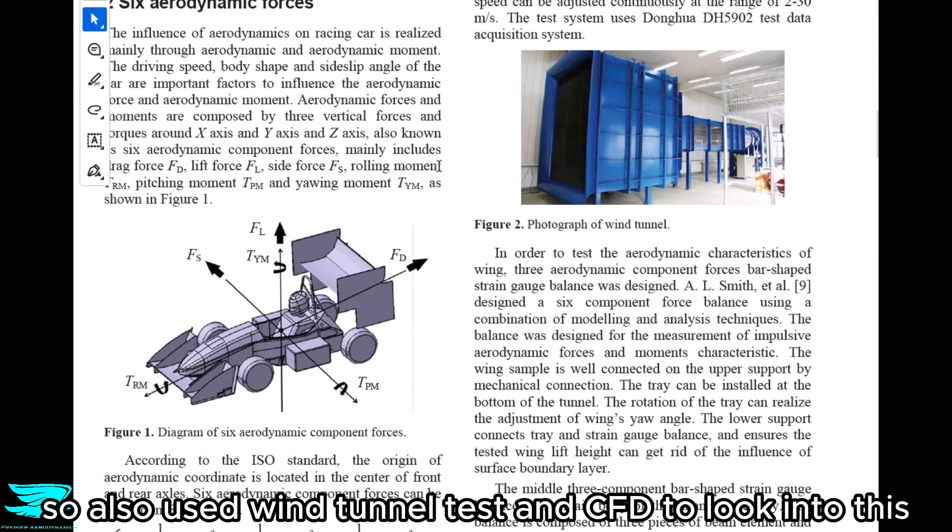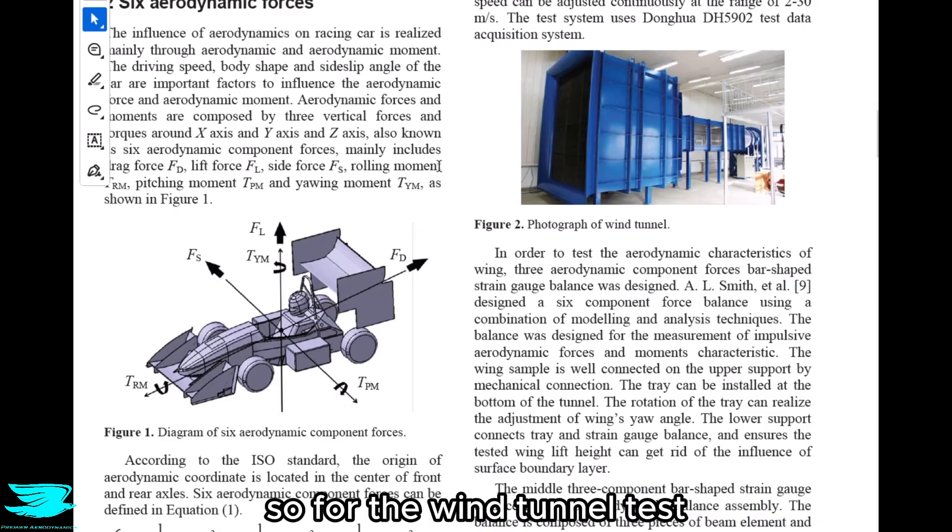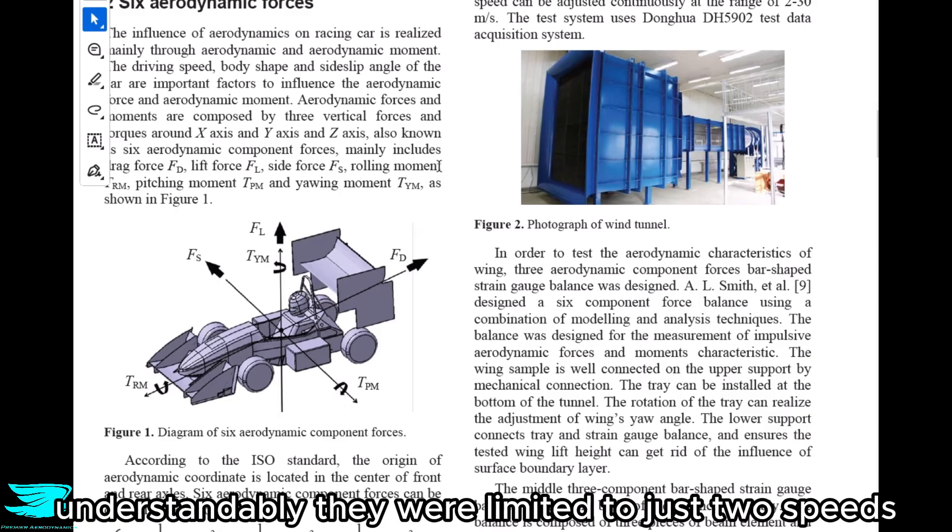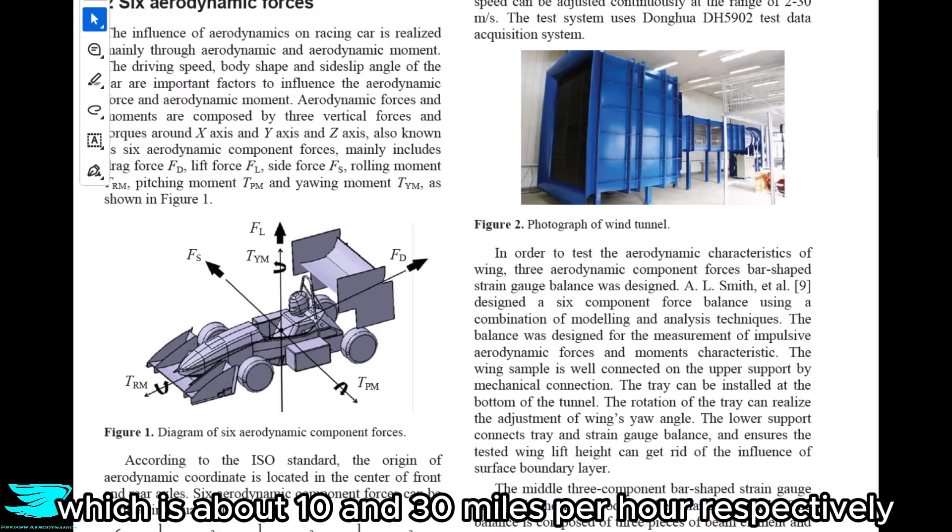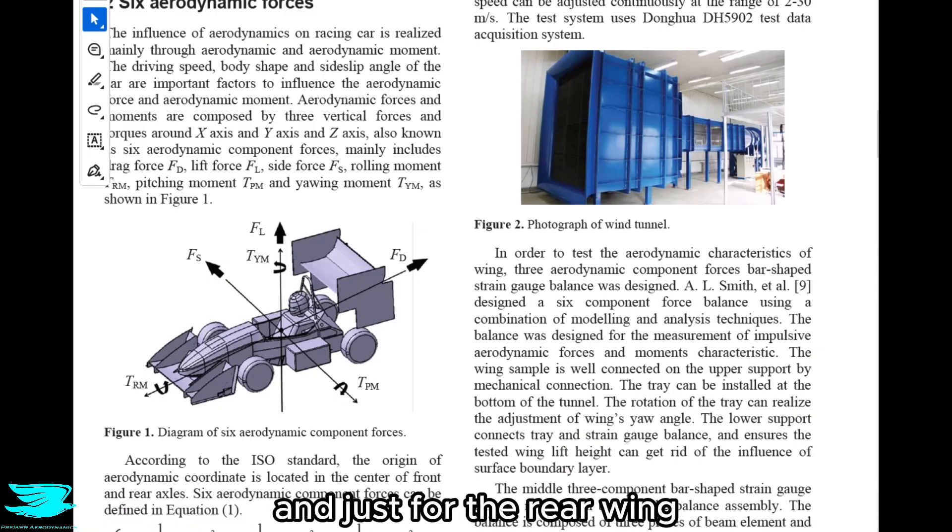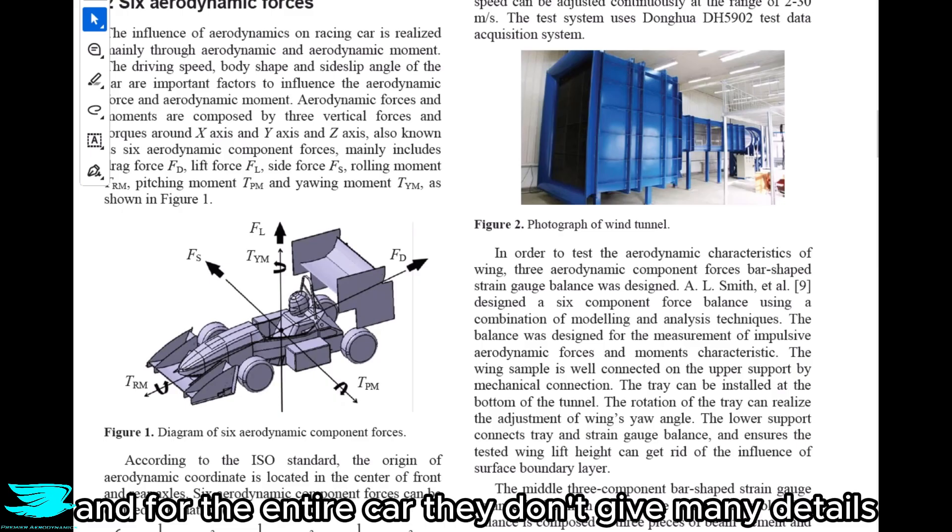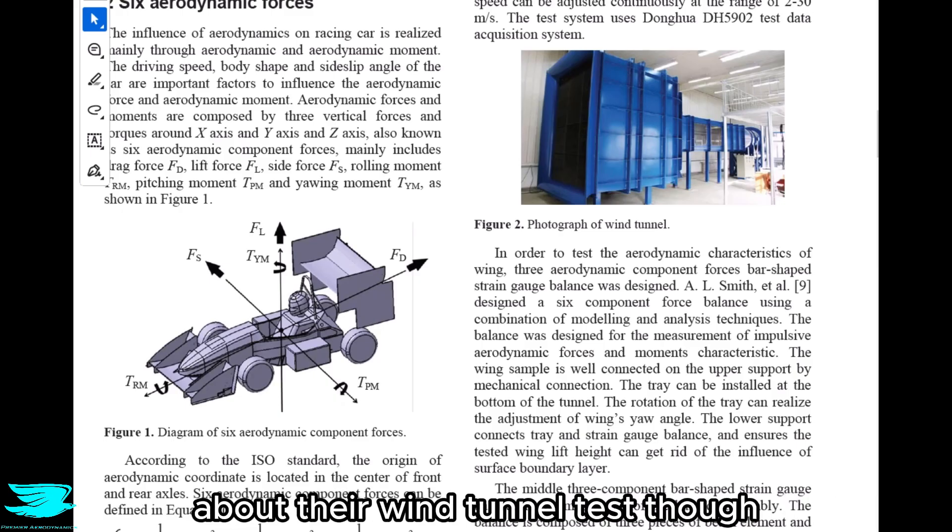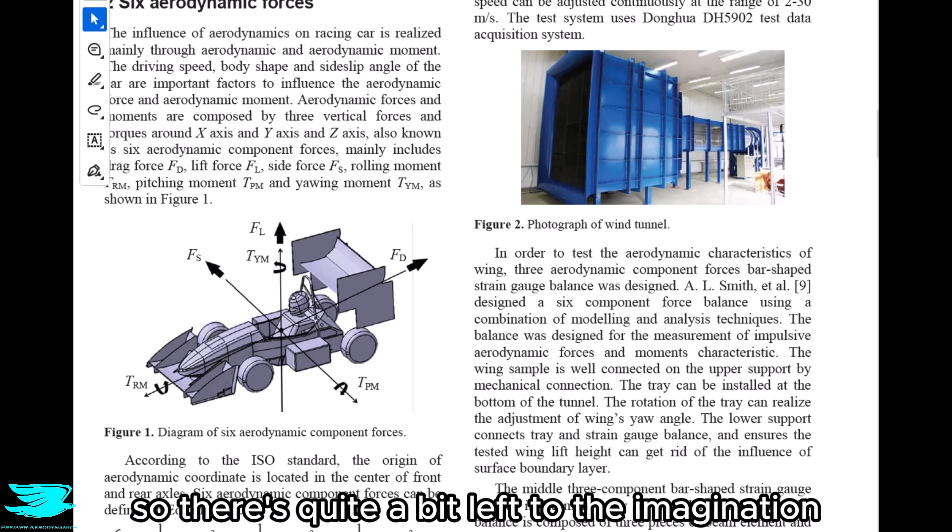The authors used wind tunnel tests and CFD to look into this, and nice touches that they looked at different speeds as well. For the wind tunnel tests, understandably, they were limited to just two speeds: 16 kph and 48 kph, which is about 10 and 30 miles per hour respectively. With no sideslip, just for the angle of attack and just for the rear wing. But for their CFD, they looked at a dozen different speeds and different sideslip angles for the entire car. They don't give many details about their wind tunnel tests or their CFD setup, so there's quite a bit left to the imagination.